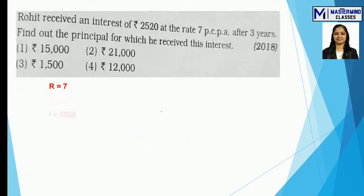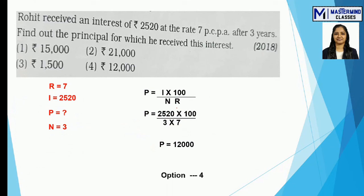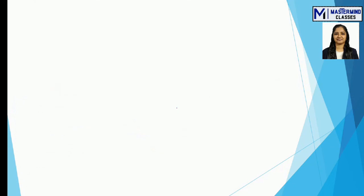Next example: rate of interest R = 7, SI = 2520, N = 3 years. We need to find the principal. Using P = (I × 100) / NR, substitute and reduce. After reducing, the answer is P = 12000. That is option number 4.